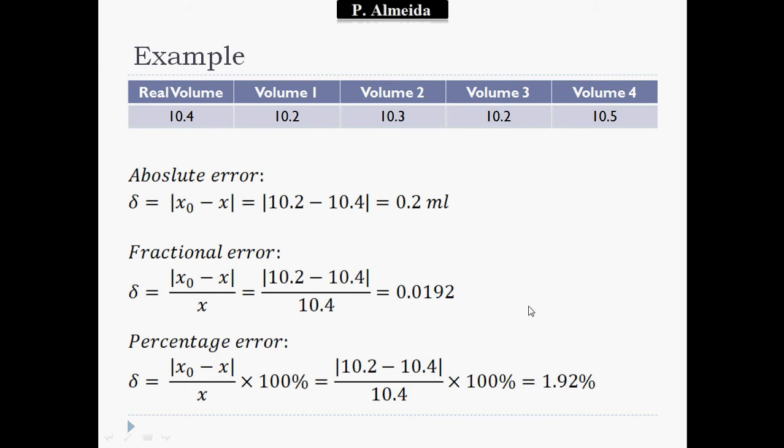Finally, the percentage error. That's going to be the fractional error times 100 in percent. The measured value that is further away from the real value, minus the real value, divided by the real value, all times 100. So 10.2 minus 10.4, divided by 10.4 times 100, gives me 1.92%.